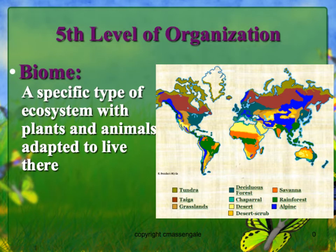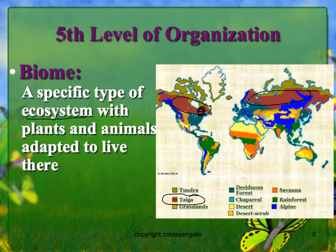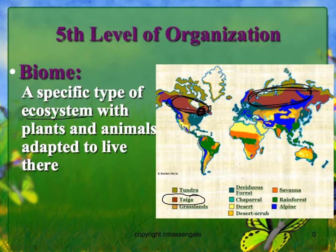A biome is a specific type of ecosystem with plants and animals adapted to live there. Like we saw in the Planet Earth video, each type of ecosystem is called a biome. Highlighted here in reddish color is the taiga biome — lots of pine trees, still very cold. One particular forest in the taiga would be an ecosystem, but all of the taiga biome across North America, Russia, and Europe is called the taiga biome, because they're all the same type of ecosystem.